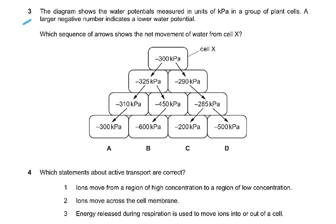Question 3: the diagram shows water potential measured in kPa in a group of plant cells. A large negative number, like −325, −300, or −450, indicates a lower water potential. Water moves from a less negative to a more negative value. For example, −290 has a higher water potential and −300 has a lower water potential, because less solute means more free water molecules.